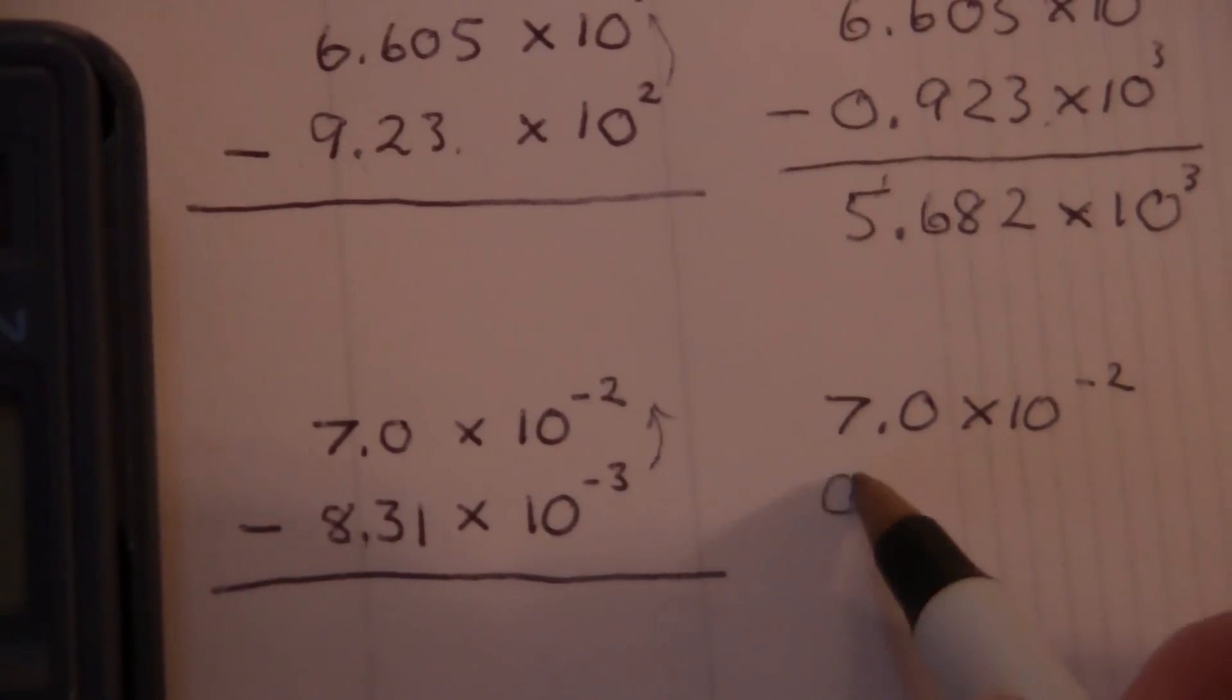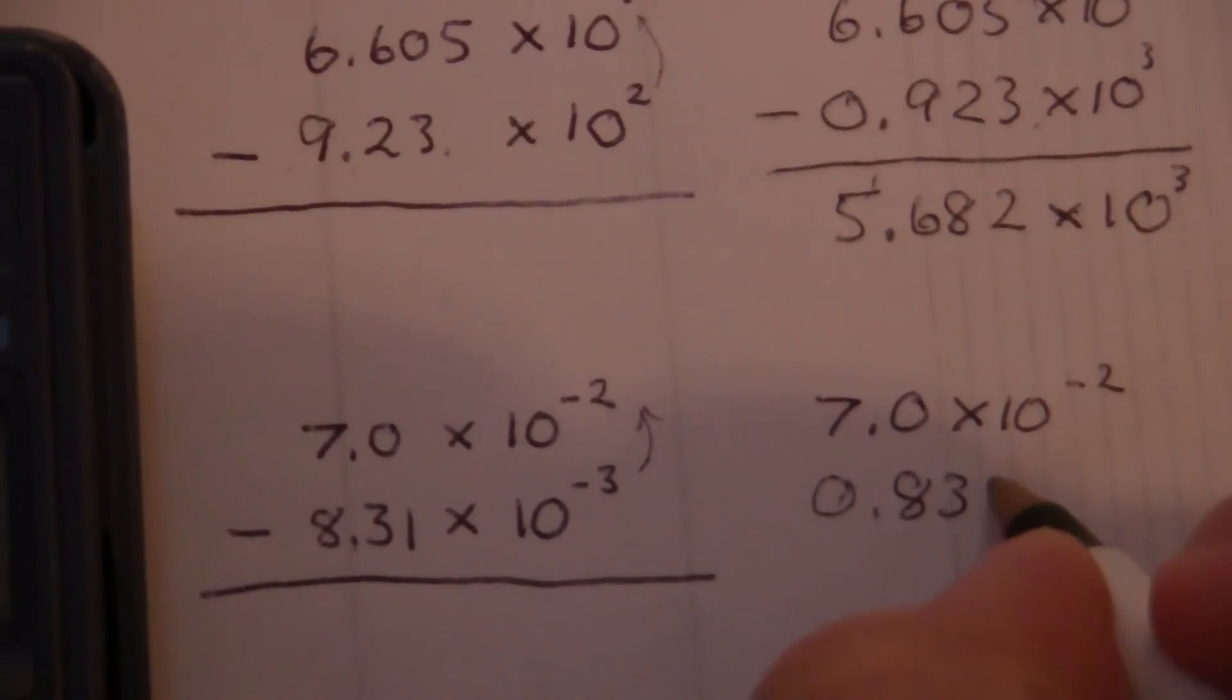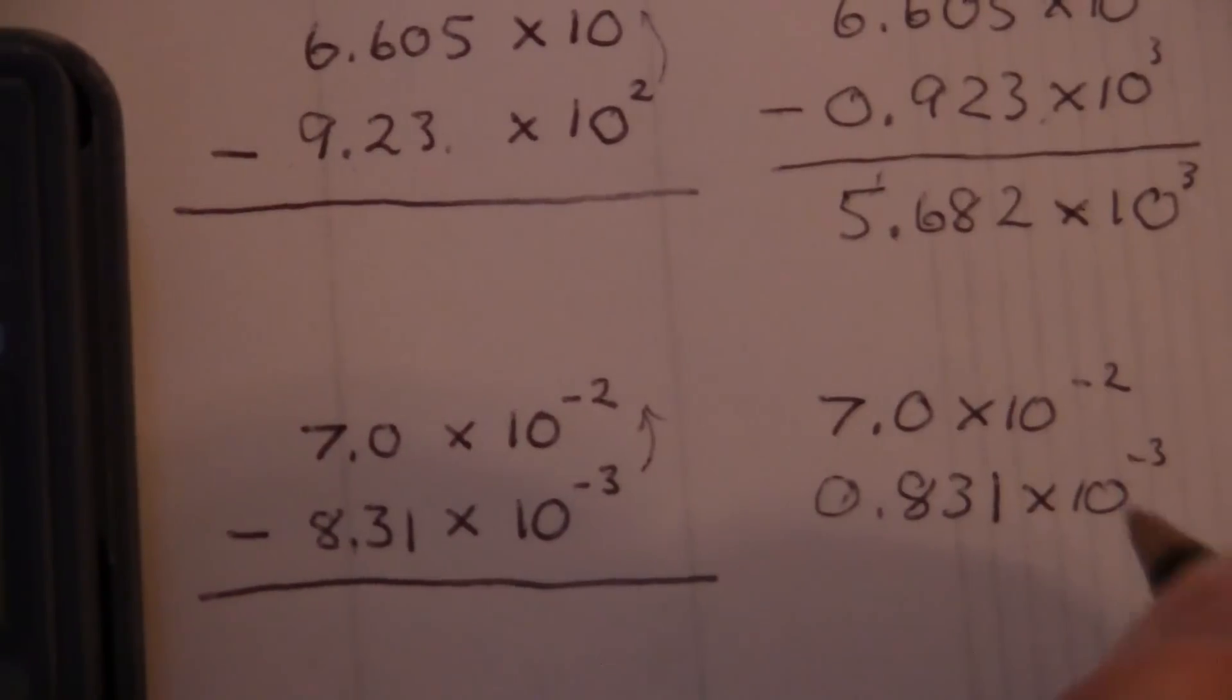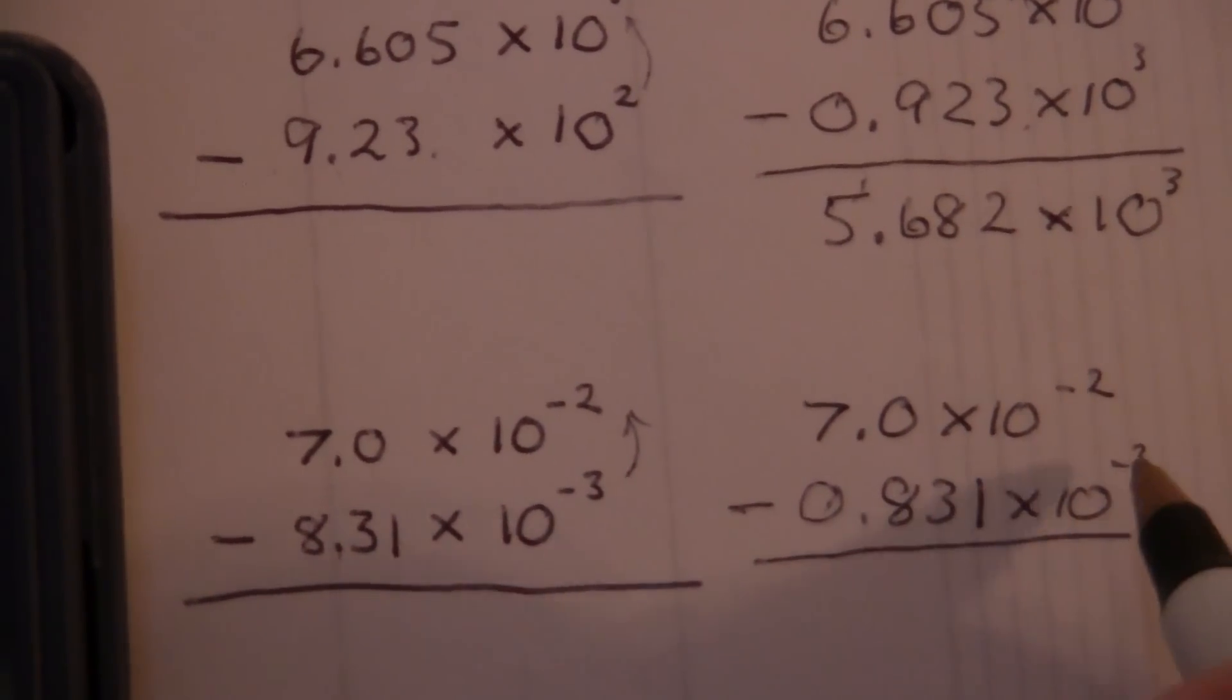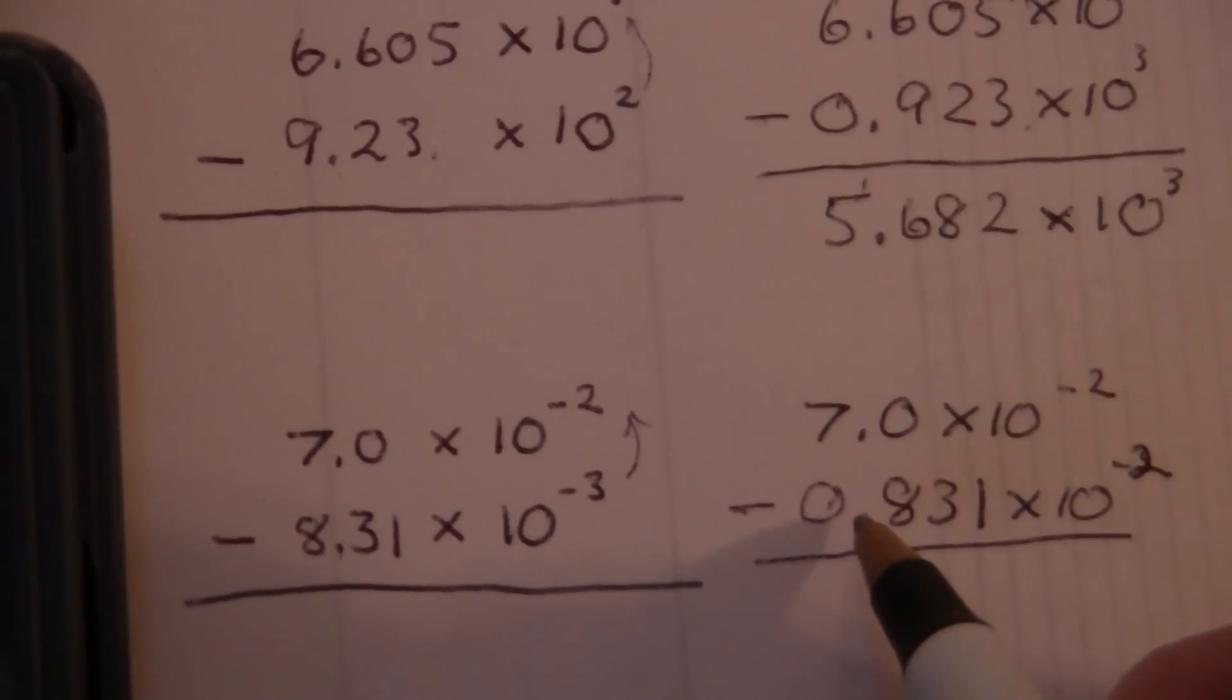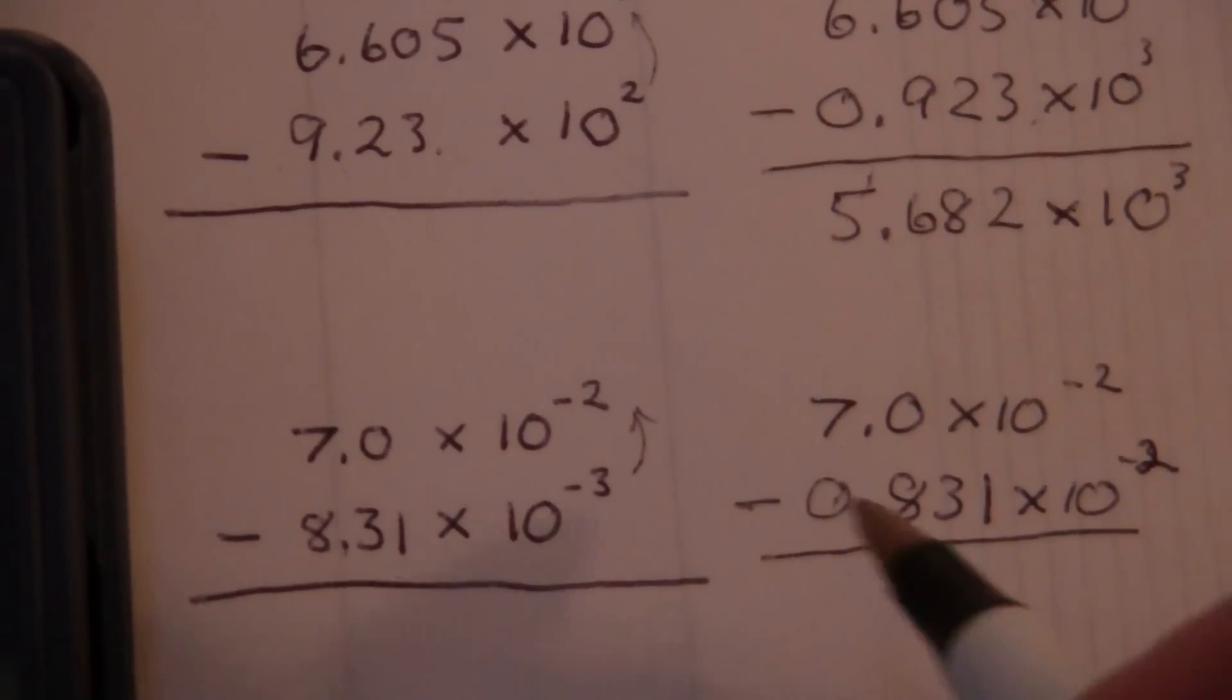So this will be 0.831 times 10 to the minus 2. We are subtracting these, so now we can—I'm sorry, this is times 10 to the minus 2. That was what we did. Moving it two places to the left from before the 8 is the same as moving it three places to the left after the 8.